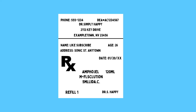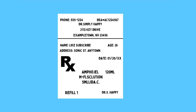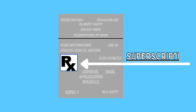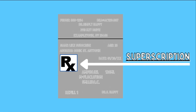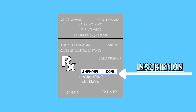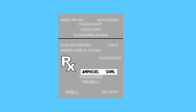The five main parts of a prescription are as follows. Superscription: the heading, which is simply the RX symbol. Inscription: the name, dosage, form, strength, and quantity of the medication.